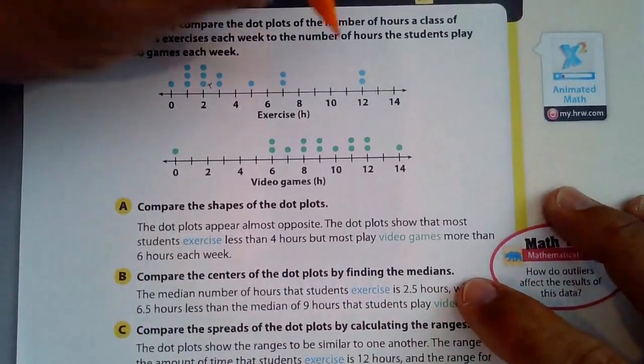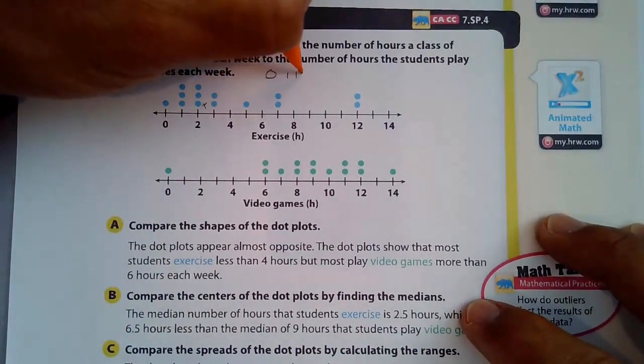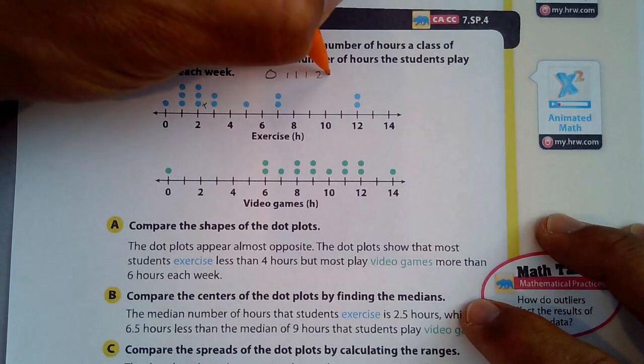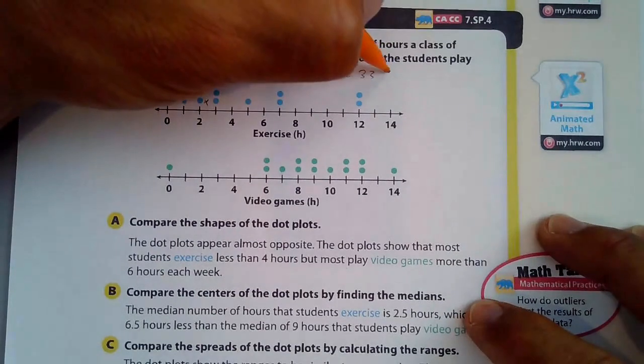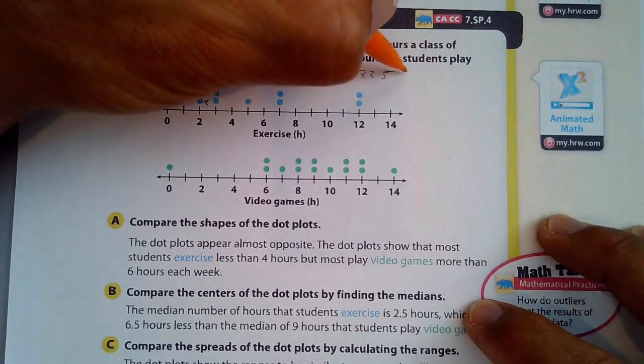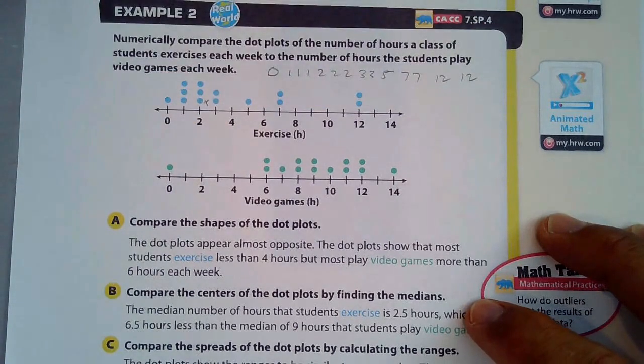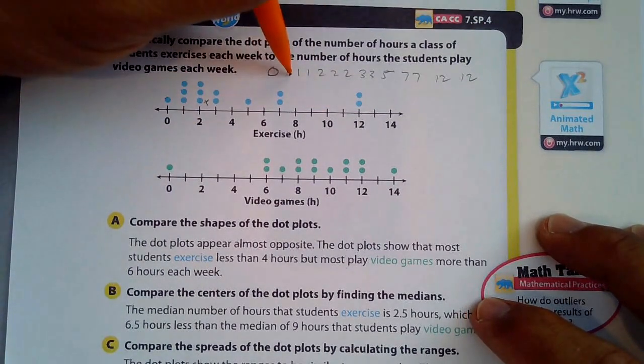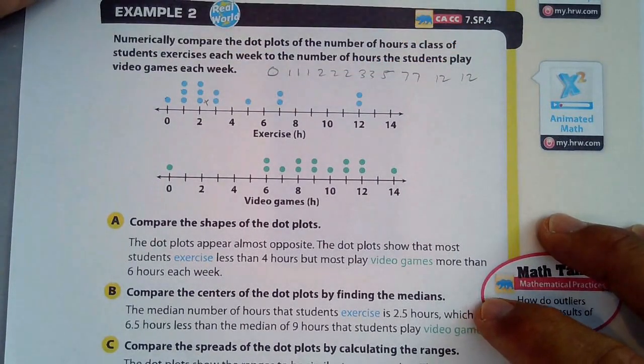And what we would do to find that 2.5 exactly is we would take 0. I'll line them up here just to do it one time. 0, 1, 1, 1, 1, 1, 1, 2, 2, 2, 2, 2, 2, 3, 3, 3, that's 5, that's 7, 7, and 12, 12. So you line them up and you count what we are 1, 2, 3, 4, 5, 6, 7, 8, 9, 10, 11, 14. There's 14 of them.